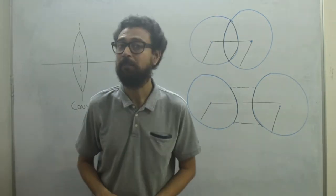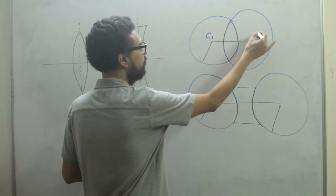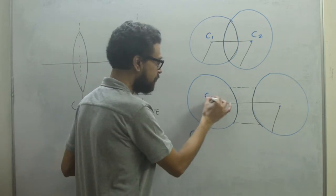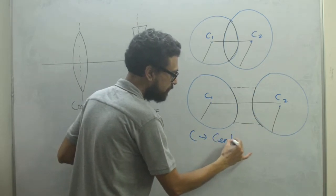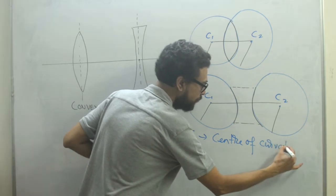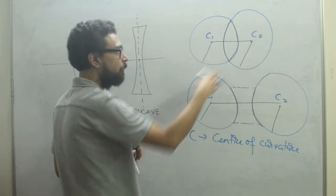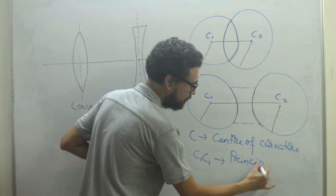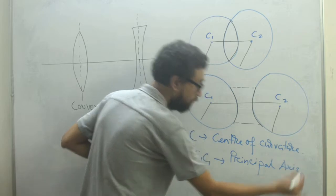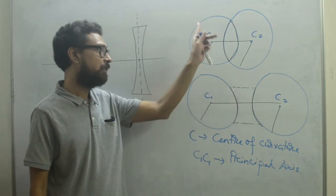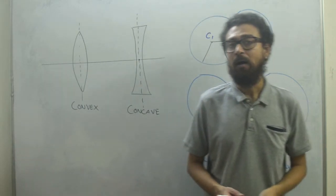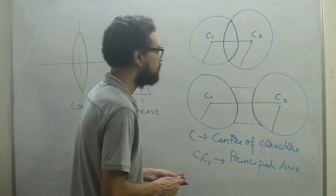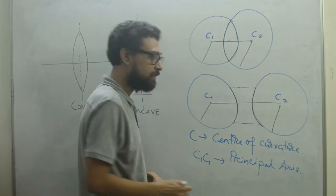These are two centers of the spherical boundaries which are called center of curvature, C. This is also the center of curvature — in general we call it center of curvature because this gives the curvature to the lens. The principal axis is the line joining C1 and C2. These two things are very important for a lens — whether it is concave or convex, it should have spherical centers called center of curvature, and the line joining them is called the principal axis.